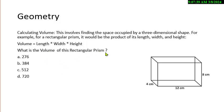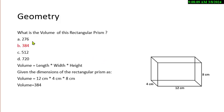So what's the volume of this prism? 276, 384, 512, or 720. And volume would be always in cubic something, cubic centimeters in this case. It's going to be 384. So we're going to multiply the length, times the width, times the height. Length is 12, times the width of 4, times the height of 8 is 384.